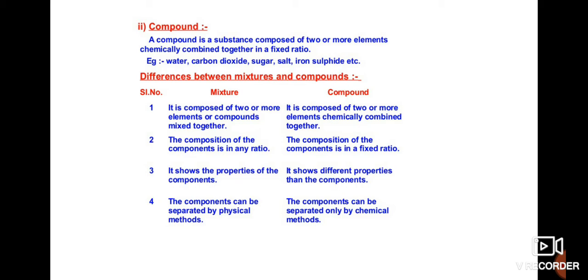A mixture will show the properties of its components, whereas compounds will show different properties than the components. The components of a mixture can be separated by physical methods, whereas in the case of compounds, the components can be separated only by chemical methods.